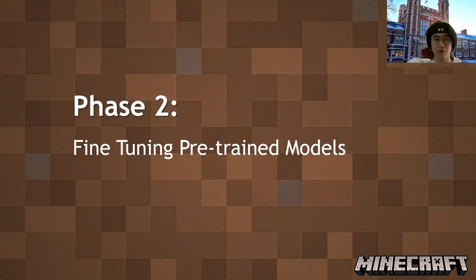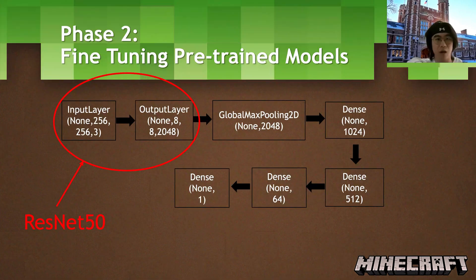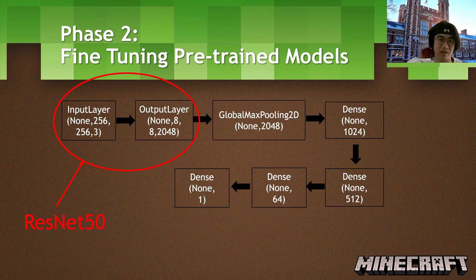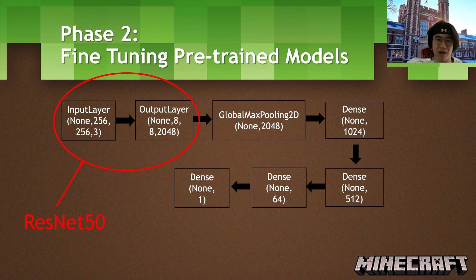In phase two, I use transfer learning. The first pre-trained model I use is ResNet 50. For the input shape of this pre-trained model, I use 256 — I tried different sizes and different resize strategies, and 256 was the best choice. Connected to the output layer of the base model, I use a global max pooling layer. I also tried global average pooling but found no difference. The last four layers are all dense layers with decreasing unit numbers.